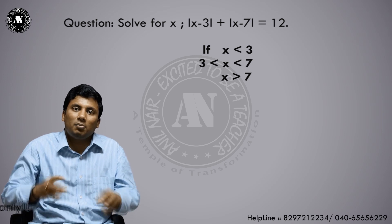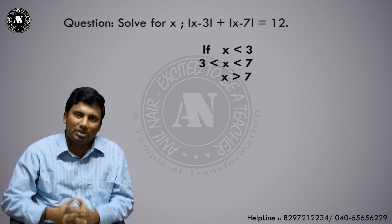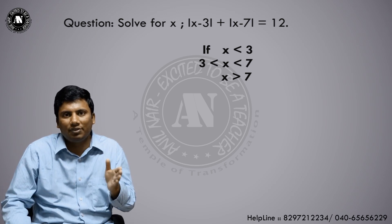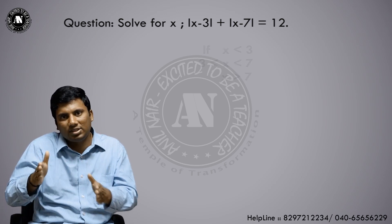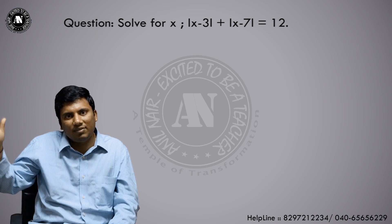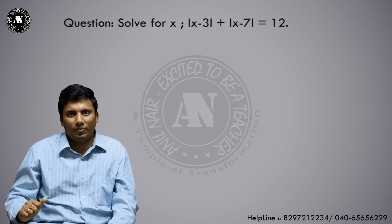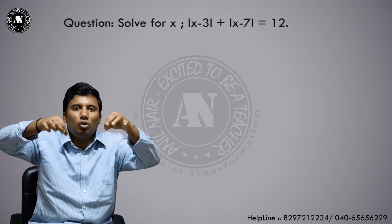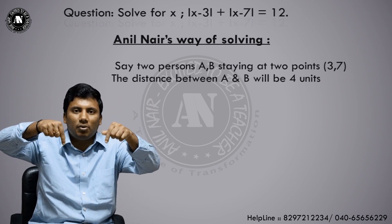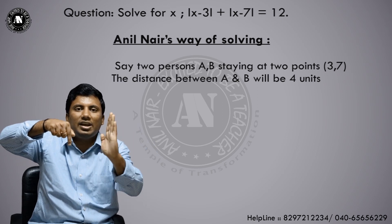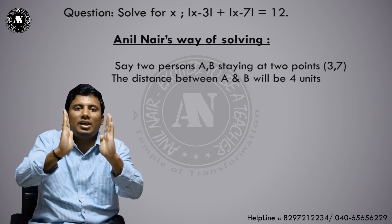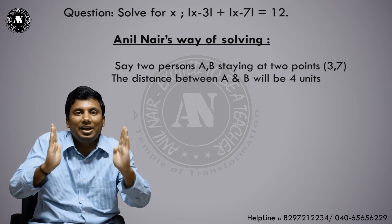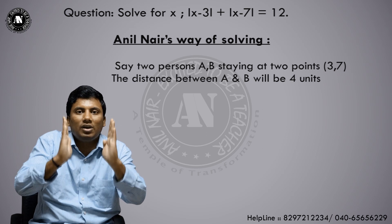Let us see Method 2. Listen carefully — this is the most logical way to solve this question. Mod(x - 3) + mod(x - 7) = 12. There are 2 critical points: 3 and 7. Let me call 2 people standing at those points — let A be at point 3 and B be at point 7. A and B combined need to travel a total of 12 units.